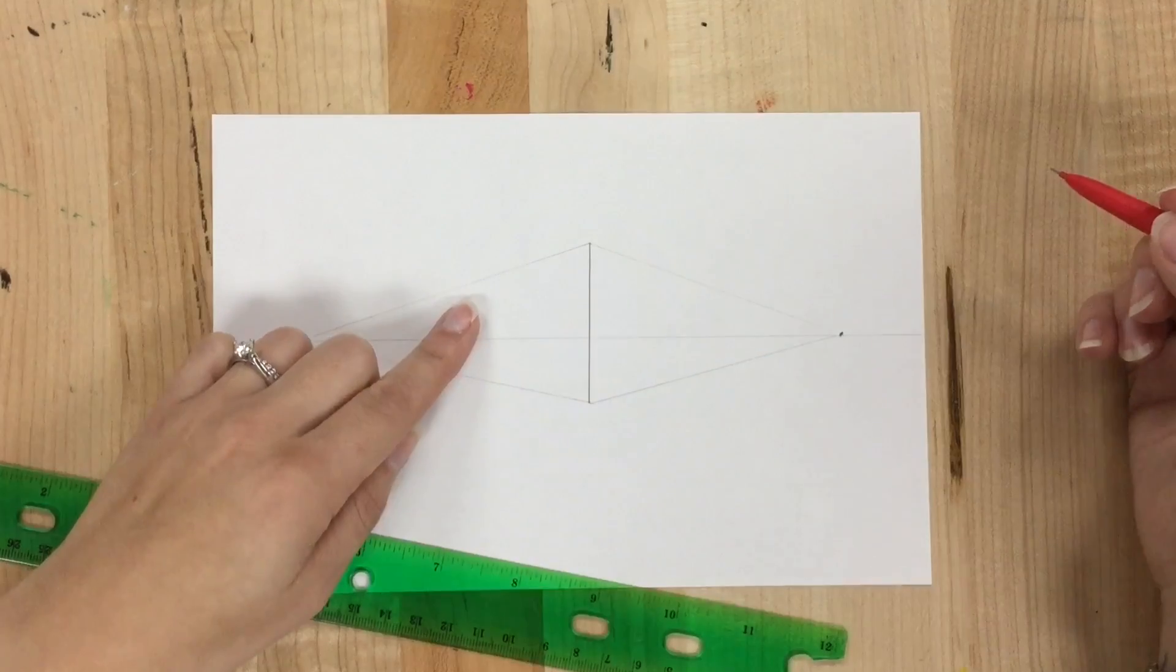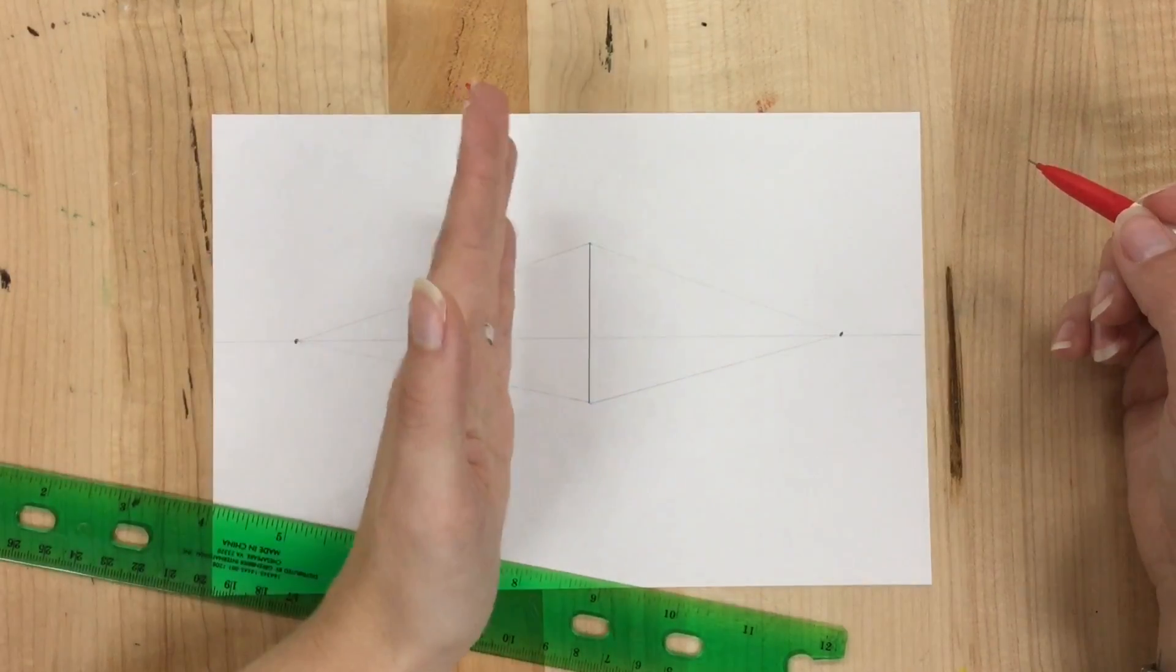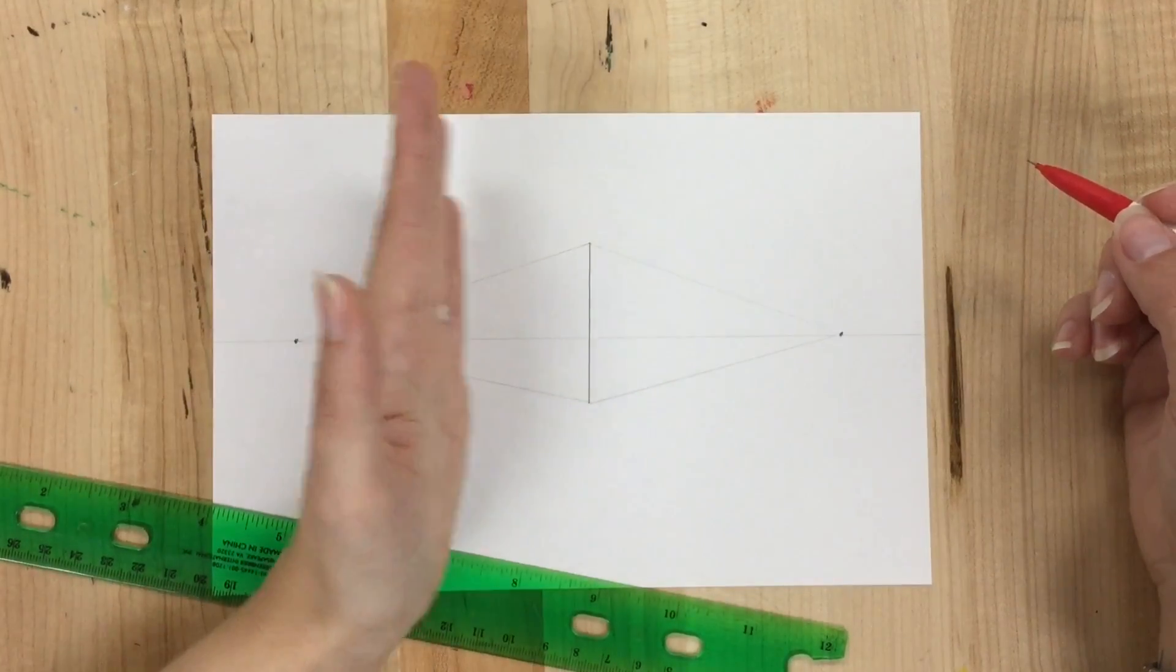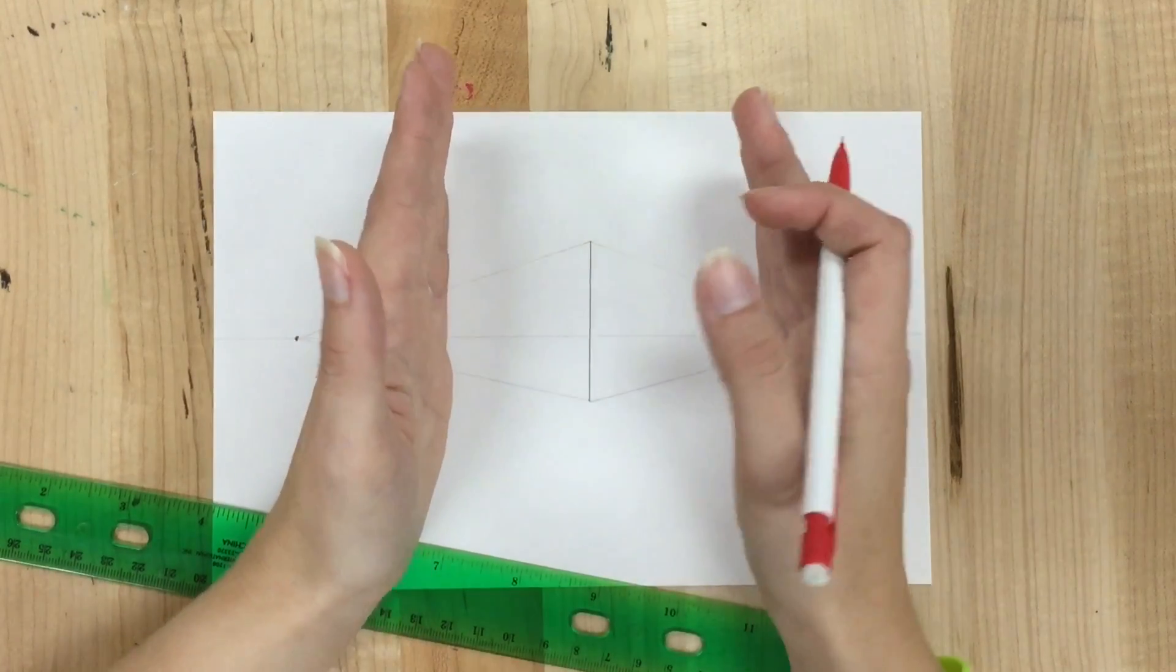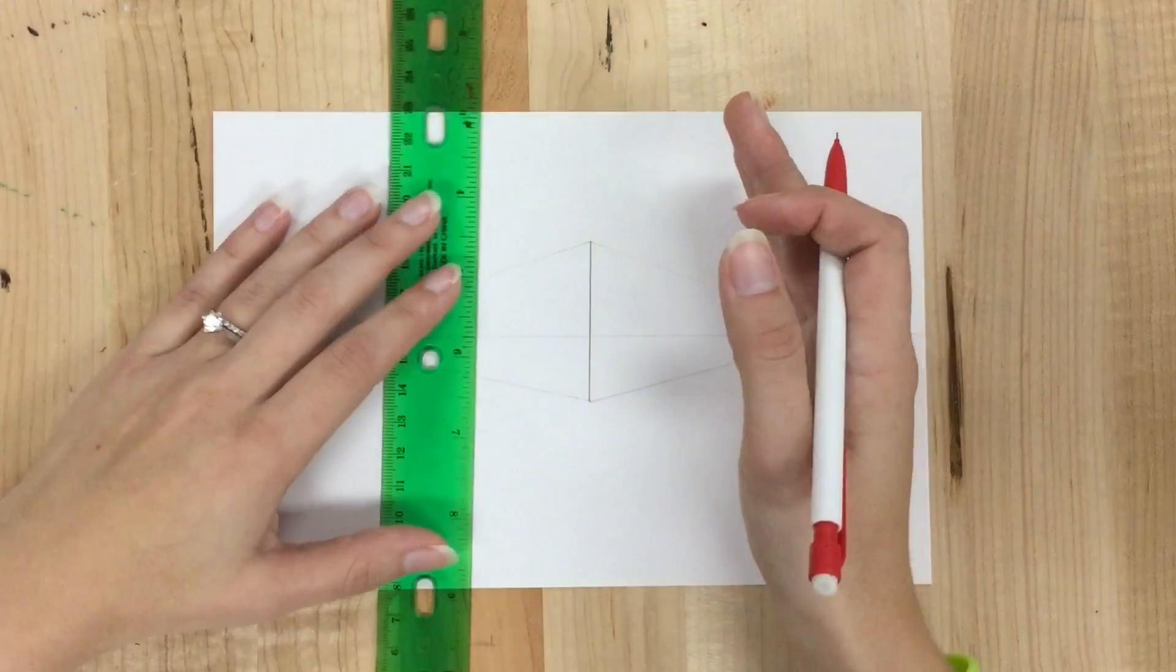My next step is to draw parallel lines to decide where I'm making a box, where my box is going to end. So one on the left and one on the right, parallel to my center, my corner line.